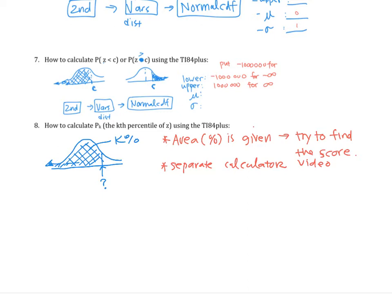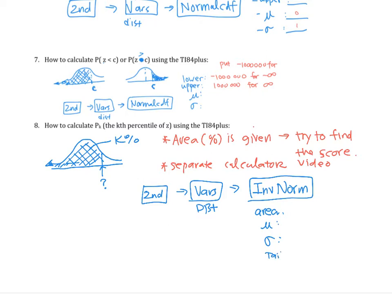What we're going to do is use second, then go to VARS which is the distribution, and then do InvNorm which is the inverse normal distribution. It asks for area, it asks for mu, sigma, and tail.